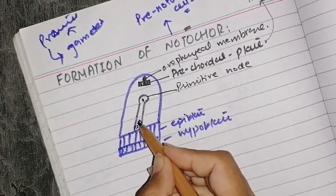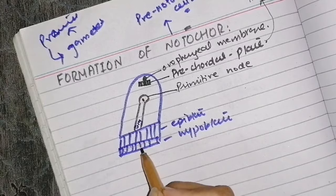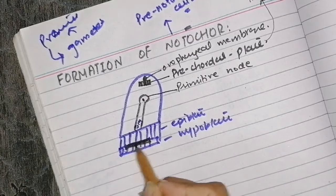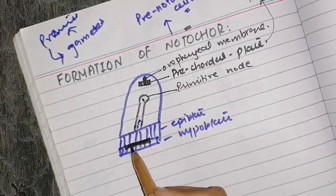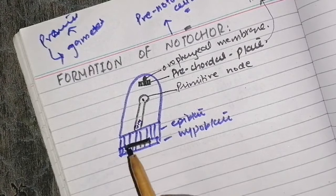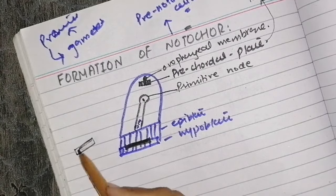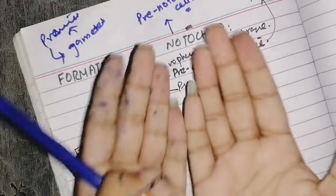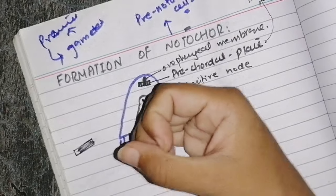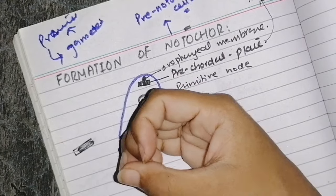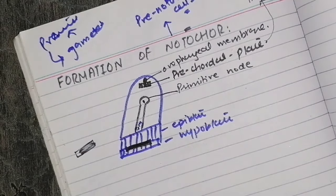When these pre-notochordal cells move, the process of gastrulation has not yet started. The epiblast and hypoblast are present, and the pre-notochordal cells will move downward and incorporate temporarily into the hypoblast. These cells first take the form of a plate, then fold, and then become a tube or cord.